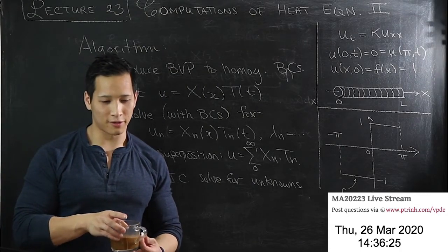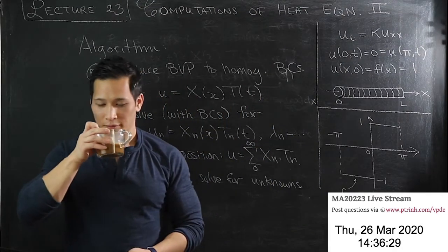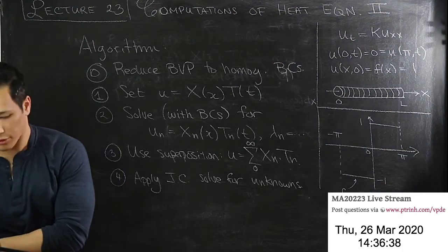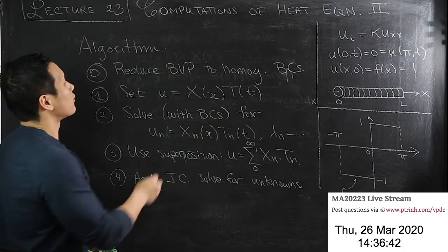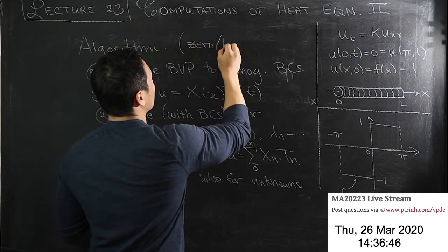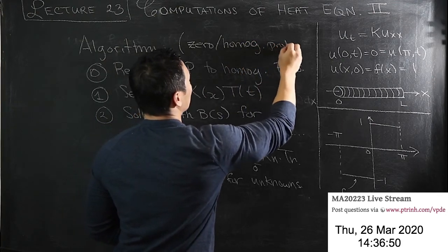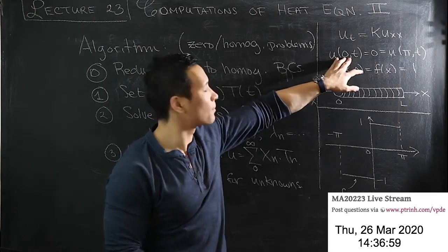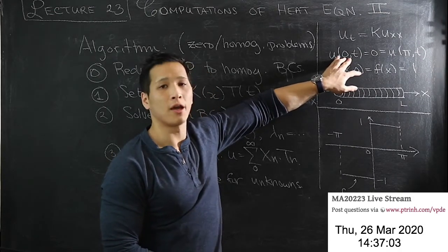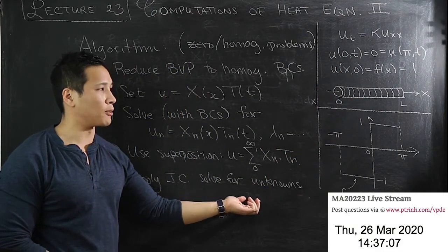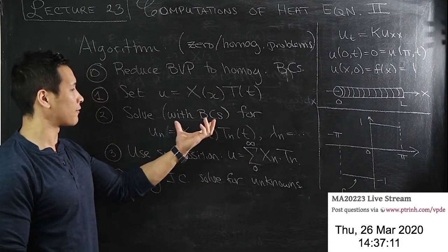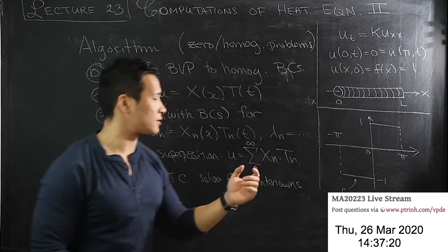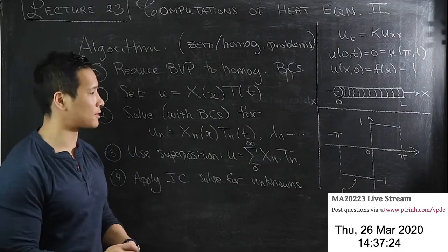The same procedure applies to Neumann problems, where you specify the derivative of the function rather than the function value itself. The only difference is in step 2 when applying boundary conditions: for Dirichlet it's X(boundary) = 0, while for Neumann it's X'(boundary) = 0. Homework problems cover the Neumann case using exactly the same algorithm.